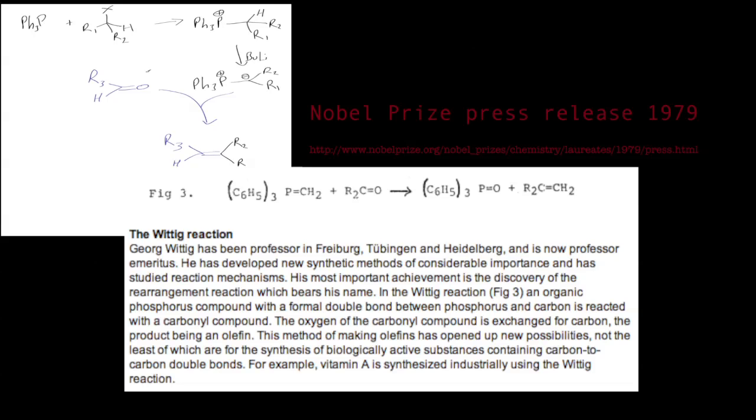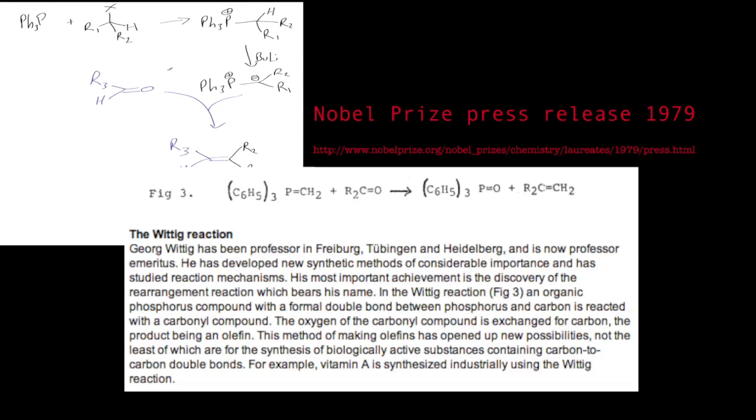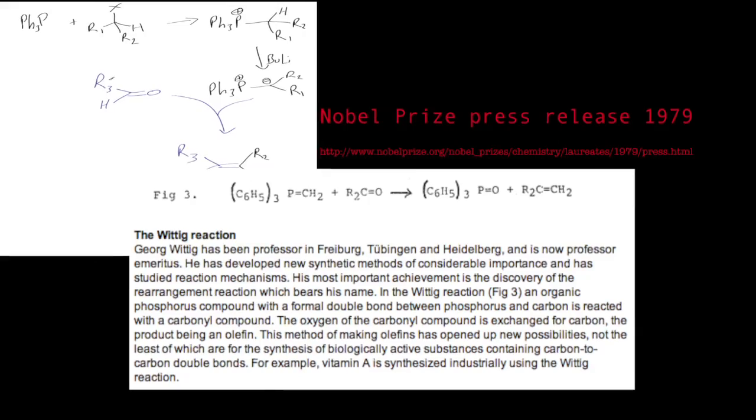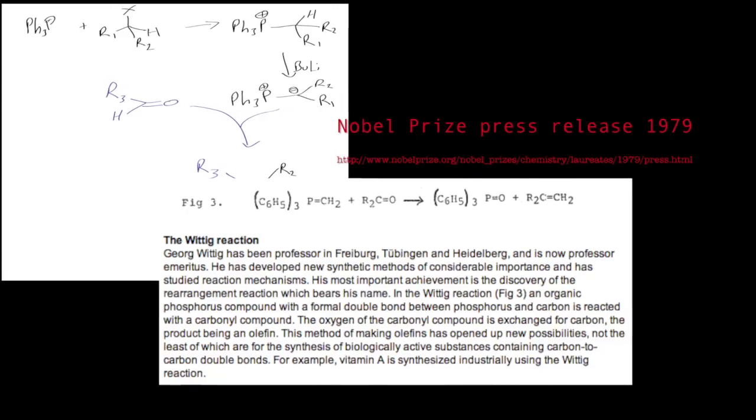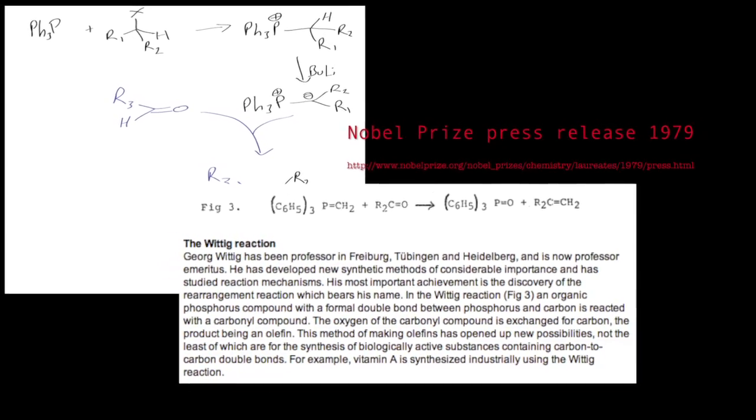Just going to go over the Wittig reactions, one of the more famous of the named reactions in organic chemistry and certainly something you'll come across in your first year of undergraduate chemistry. Basically, the Wittig reaction is used to form olefins or alkenes.